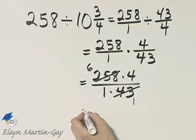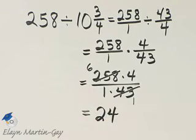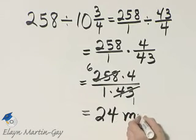So I have 6 times 4 over 1 times 1, or 24. So how far on one gallon? It would be 24 miles.